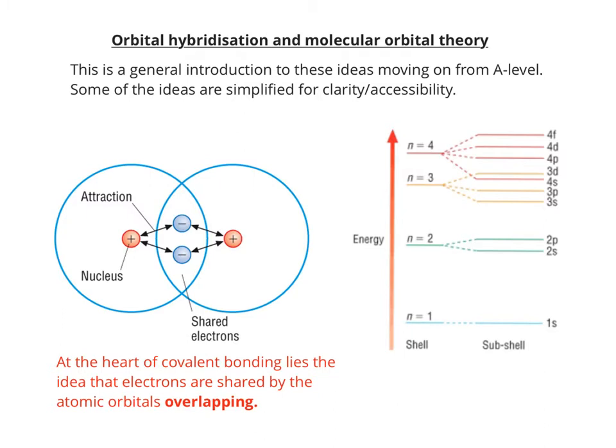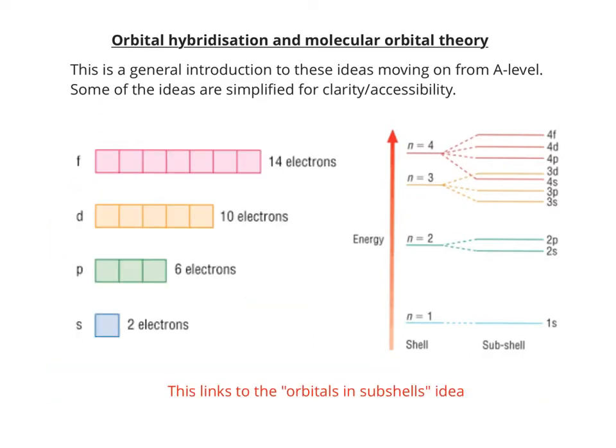The fundamental idea behind covalent bonding is that electrons are shared by the atoms when the atomic orbitals overlap. It's also taught at A-level that different atomic orbitals are situated in different energy levels, and this obviously links to the orbitals in subshells idea.